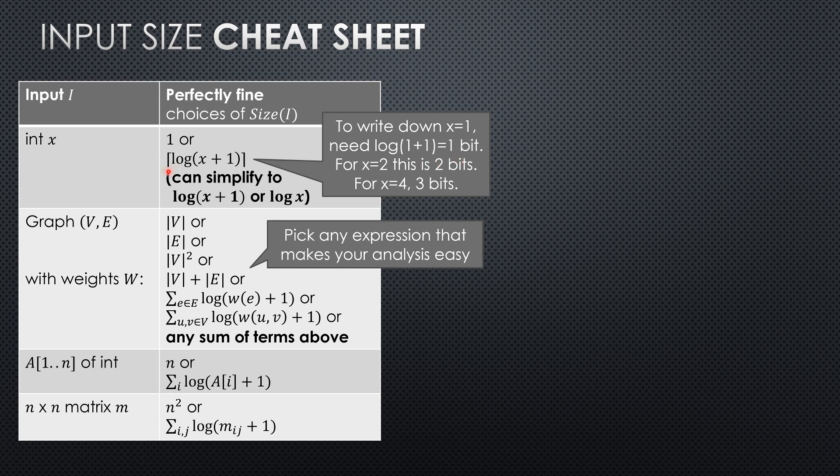And so if x is 1, what's log x? Well, log 1 is 0. So this would say previously log x would say we need 0 bits to write this down. So that's problematic. So if we do log x plus 1, well then it's going to be log 2, log base 2 of 2, that we're imagining this is log base 2.